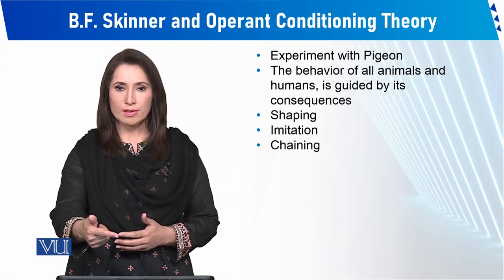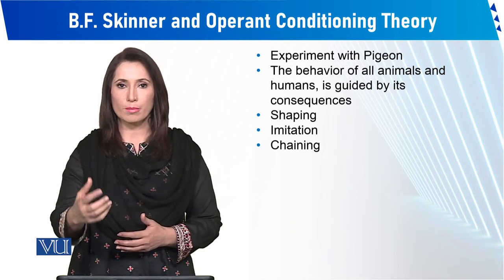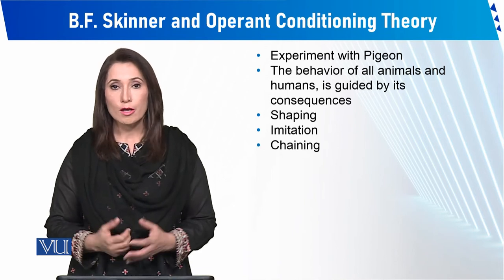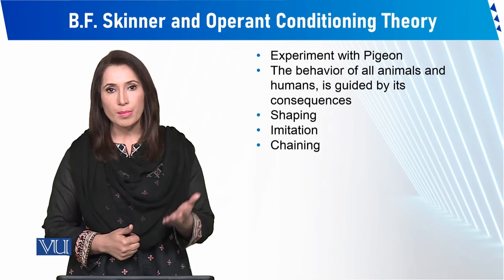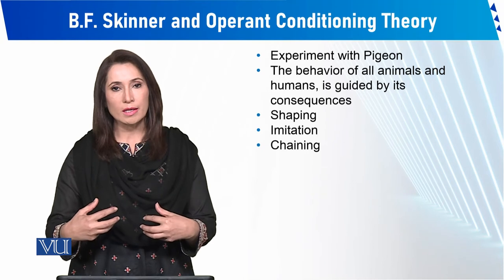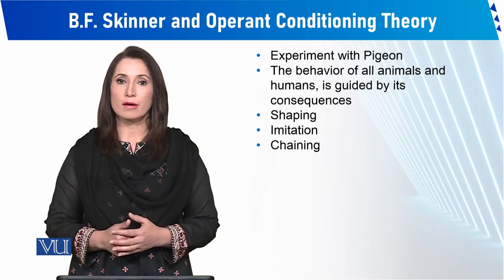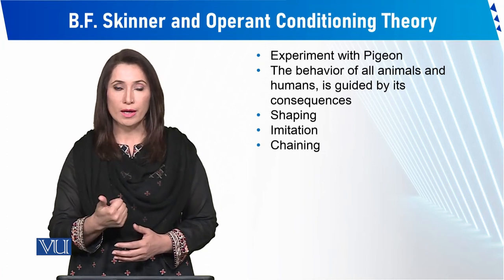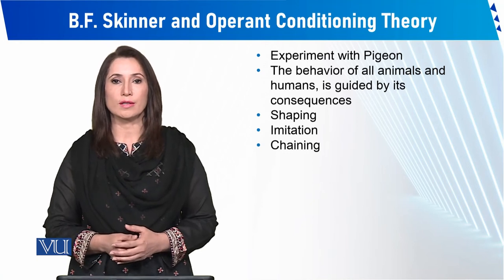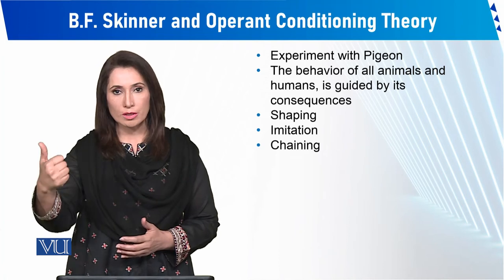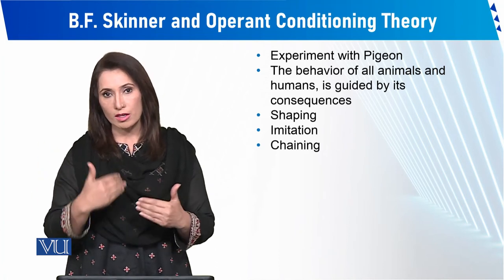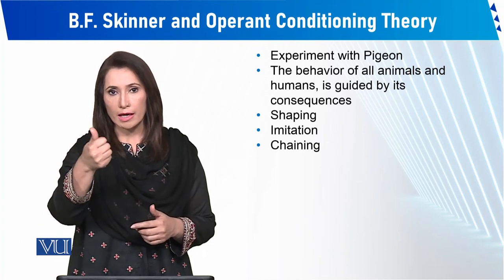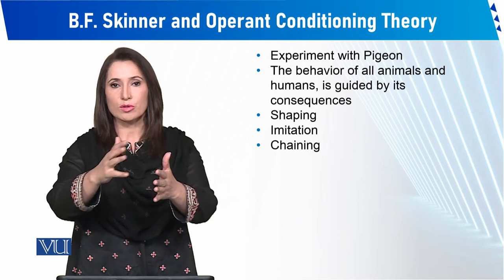Unwanted behavior को दूर करने के लिए हमें positively motivate करना पड़ेगा, तभी किसी के behavior को shape किया जा सकता है। Imitation इसके लिए बड़ी important है — बच्चे observe करके सीखते हैं। जैसा teacher और parents का model होता है, बच्चे वही behavior सीखते हैं। Aggressive father अपने बच्चे को aggression communicate करता है। Pigeon experiment में Skinner ने chaining का concept दिया — light और lever जैसे step-by-step cues दिए जो सही direction indicate करते थे।